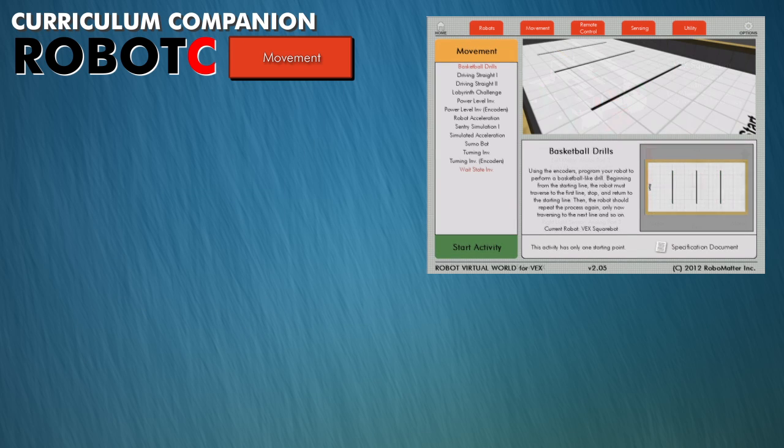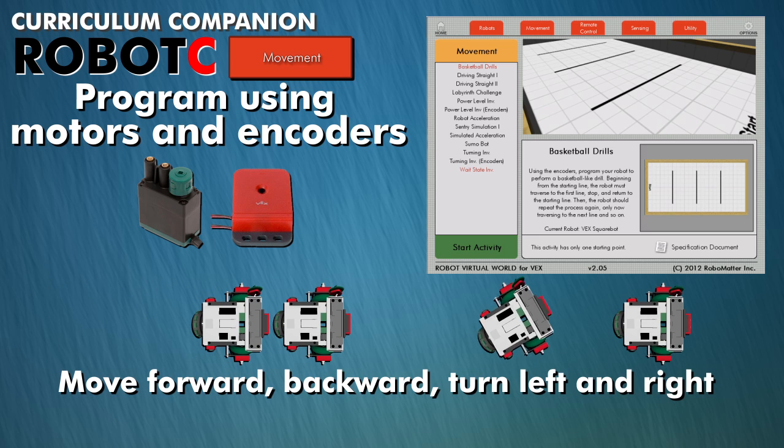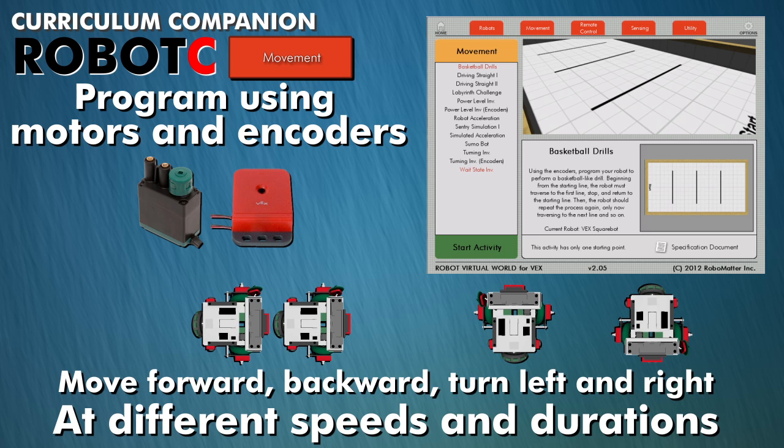The Movement section gives students the opportunity to learn how to program using the motors and encoders on their robots. They will program their robots to move forward, backward, turn left and right at different speeds and durations.